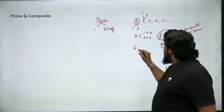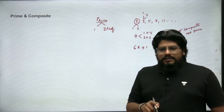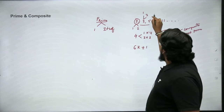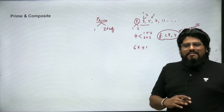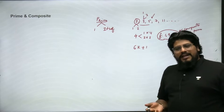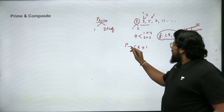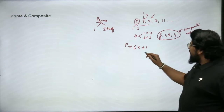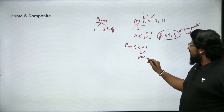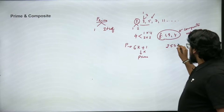Now let us come down to how to identify whether a number is prime or not. Prime numbers will be of the form 6k ± 1, which means every prime number should be of the format 6k ± 1, where prime numbers start from 5. Two and three are basic numbers which everybody knows. So apart from 2 and 3, every other prime number will be of the format 6k ± 1. But remember — every prime number is of the format 6k ± 1, but every number that is of the format 6k ± 1 is not necessarily a prime.